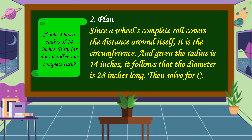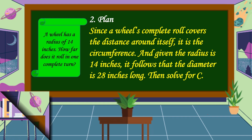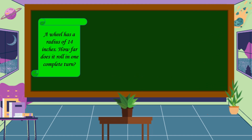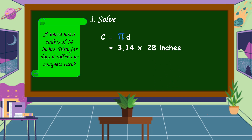Then, solve for C, or we're going to find the circumference. We have already a plan, so let's solve the problem. The formula in finding the circumference is C equal to pi times diameter. The approximate value of pi is 3.14. In our problem, the given is a radius of 14 inches. To make it a diameter, we're going to multiply it by 2. So, 14 inches times 2 is equal to 28 inches.